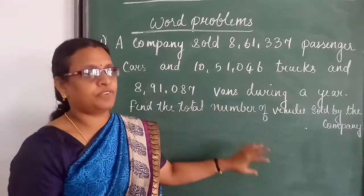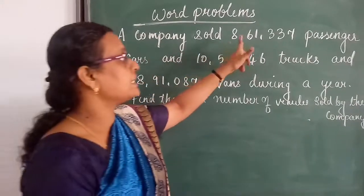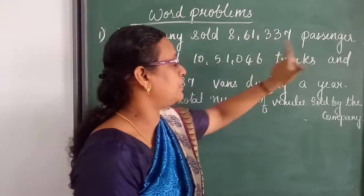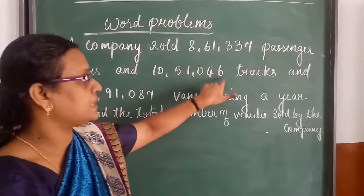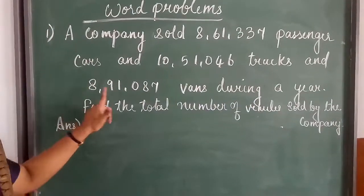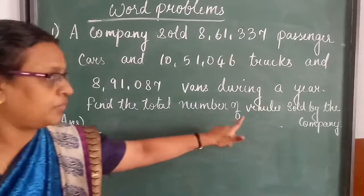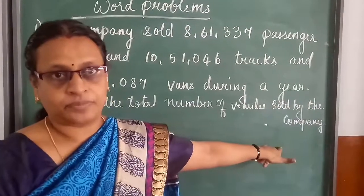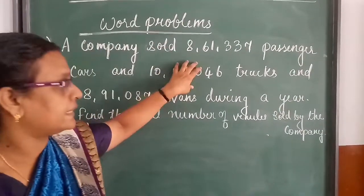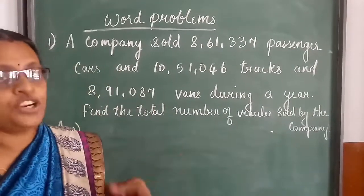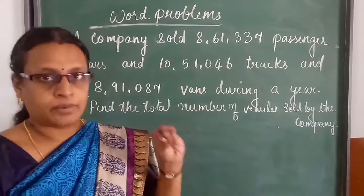Here, the question first — where is the question? A company sold 8,61,337 parts in cars and 10,51,046 trucks and 8,91,087 vans during a year. Find the total number of vehicles sold by the company. So, in a year, this many cars, trucks, and vans are sold, and we want to find the total number of vehicles sold.